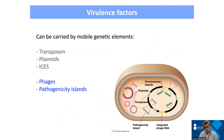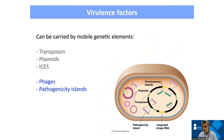By definition — and we are even challenging this concept of mobility — mobile genetic elements include transposons, plasmids, and insertion sequences: elements that can move from one bacterium to another, many times within the same species, but some of these elements can even go to completely different species.